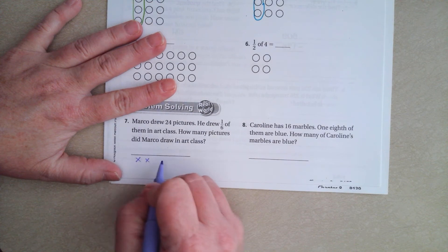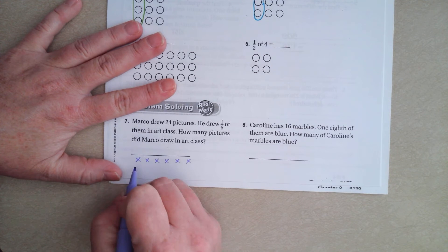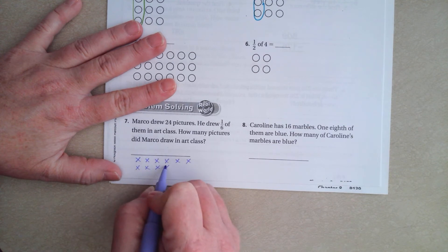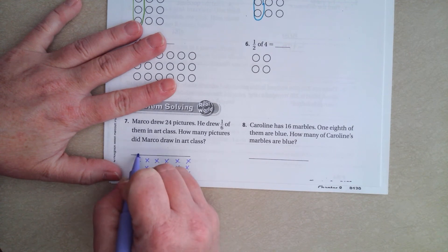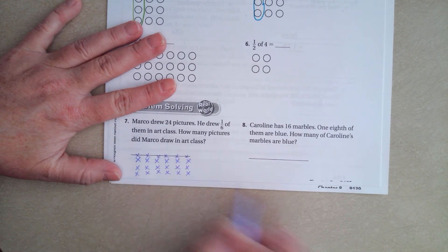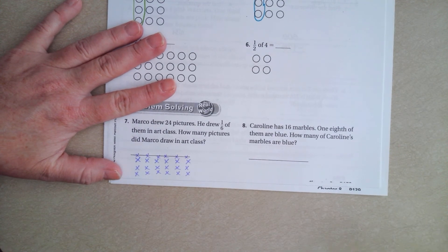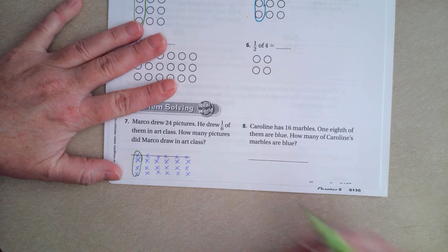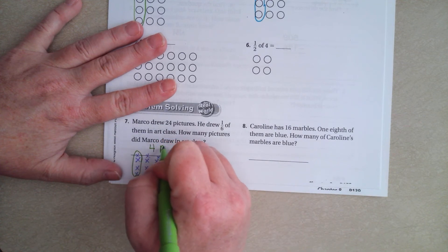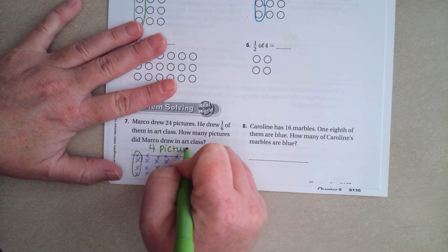We're going to put them into 6 columns. There's 6, 7, 8, 9, 10, 11, 12, 13, 14, 15, 16, 17, 18, 19, 20, 21, 22, 23, 24. So 1 of those 6, how many pictures? 4 pictures.